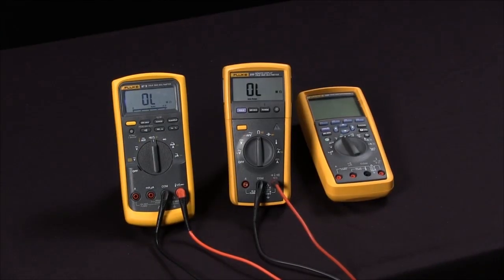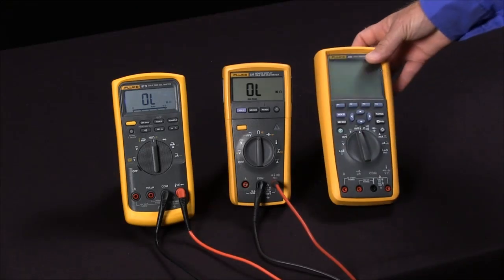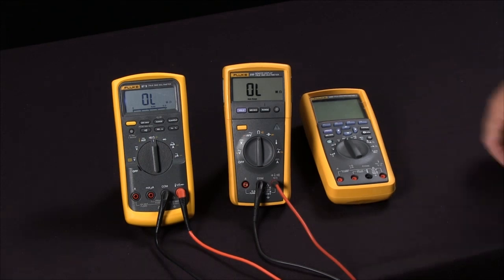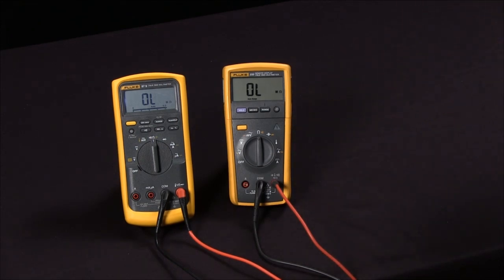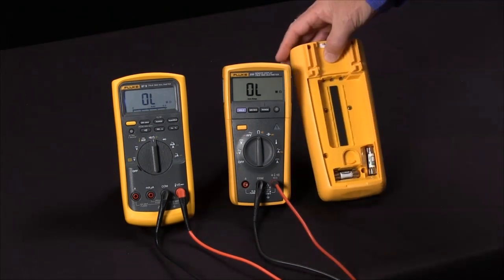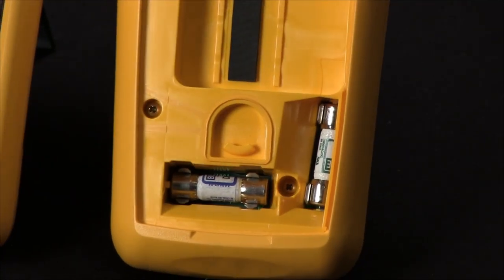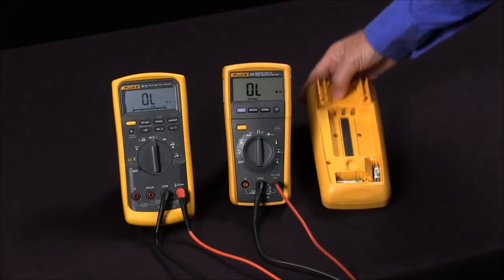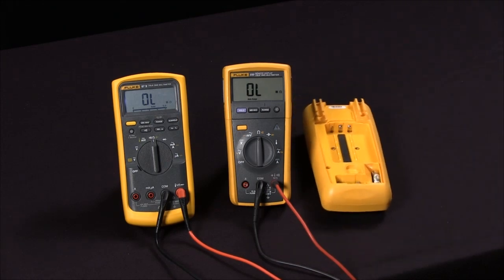We're here today to talk about how to check the fuses in your multimeter without having to open the case. Most multimeters that meet national standards will have fuses on the current input jacks to protect you. These fuses are located inside the meter and they're high-energy fuses, so they can take quite a lot of load without any damage or injury happening to you. To check these fuses, you would typically need to open